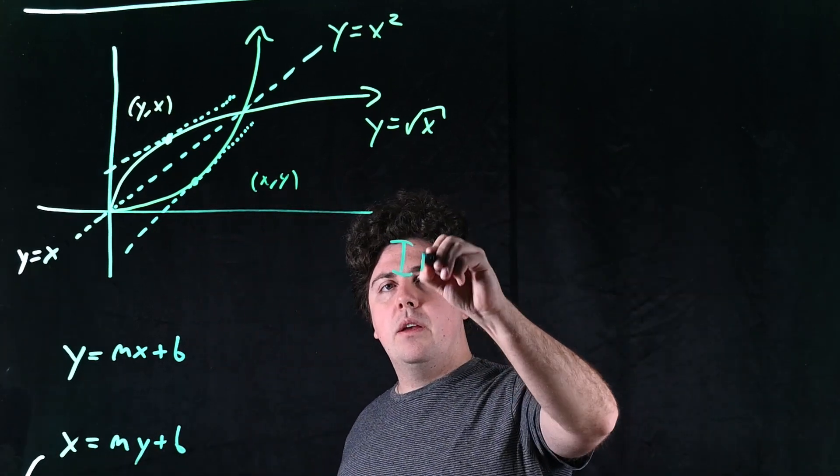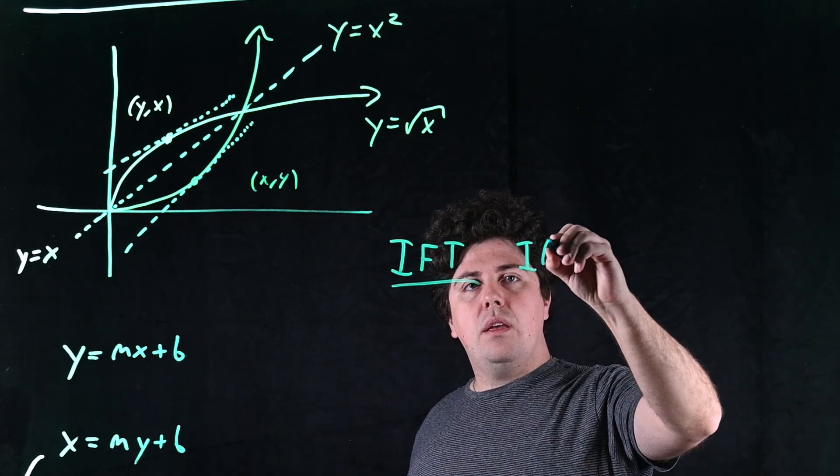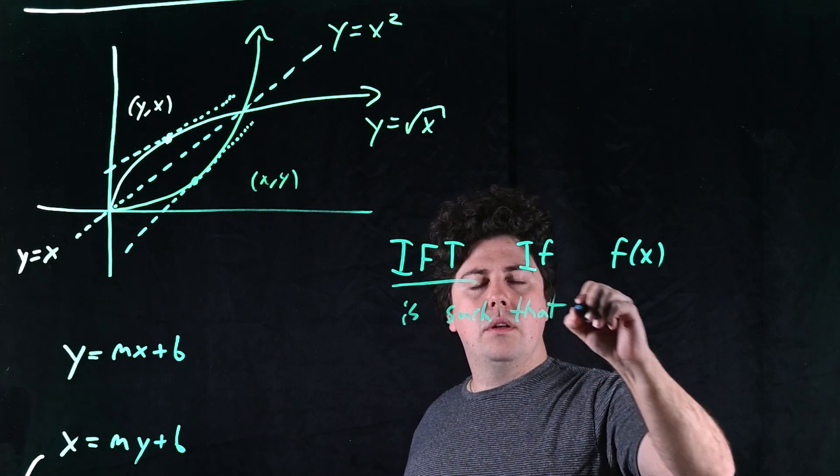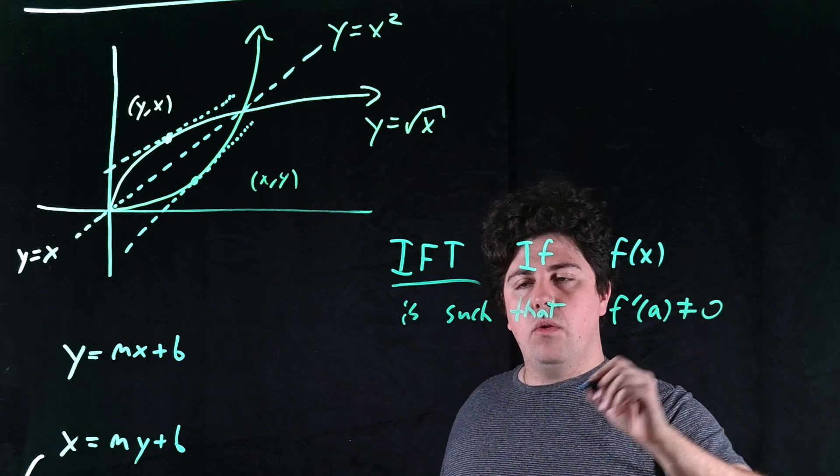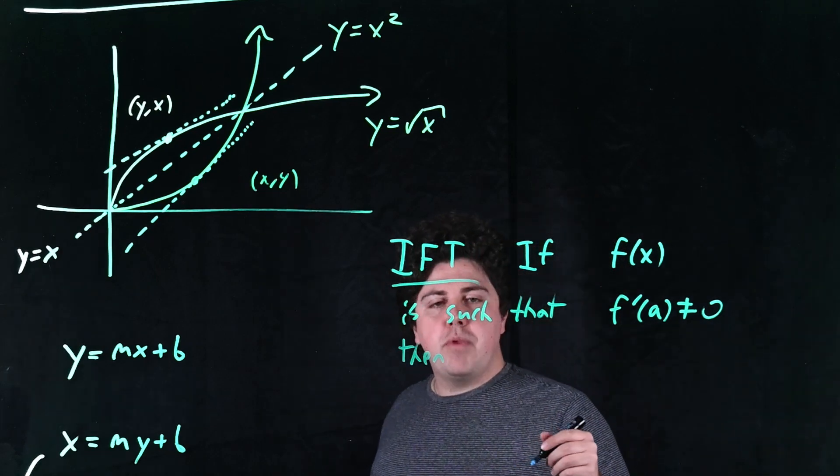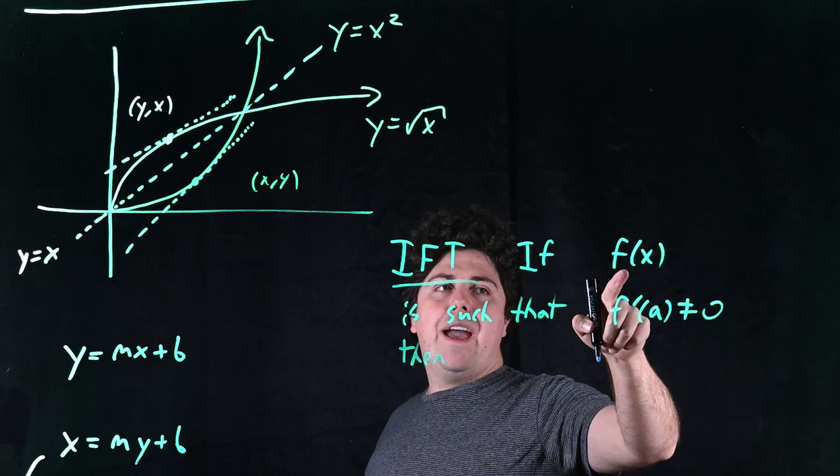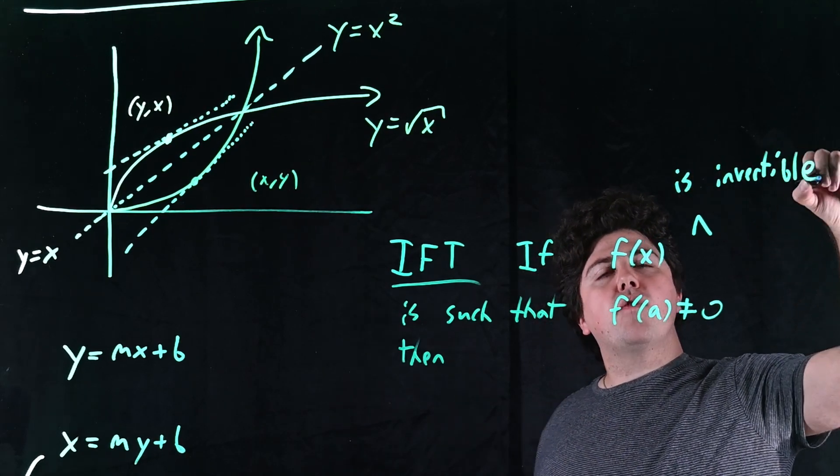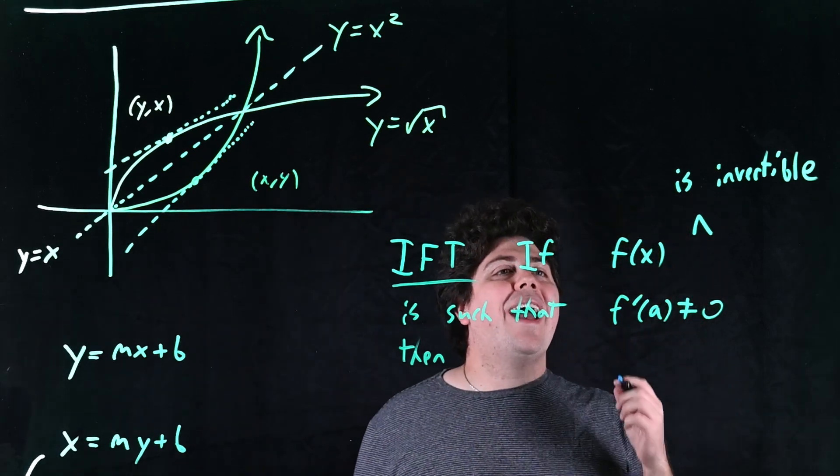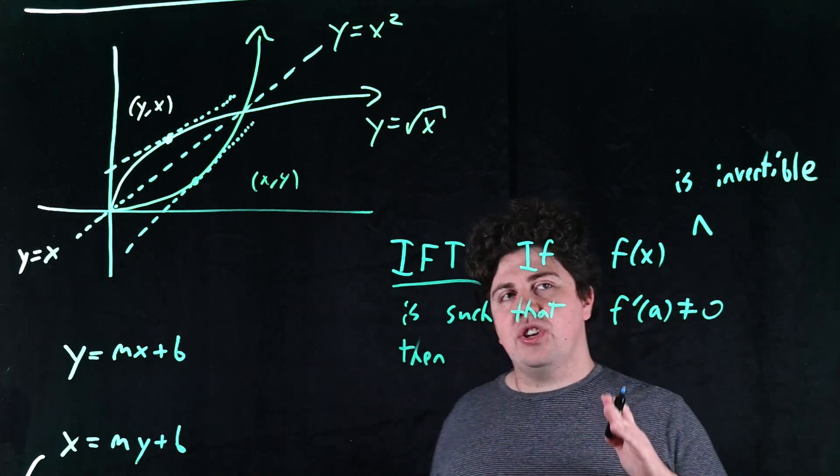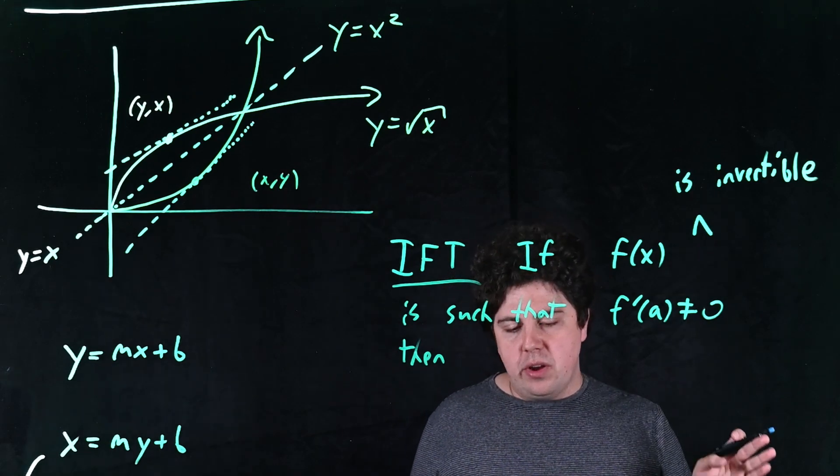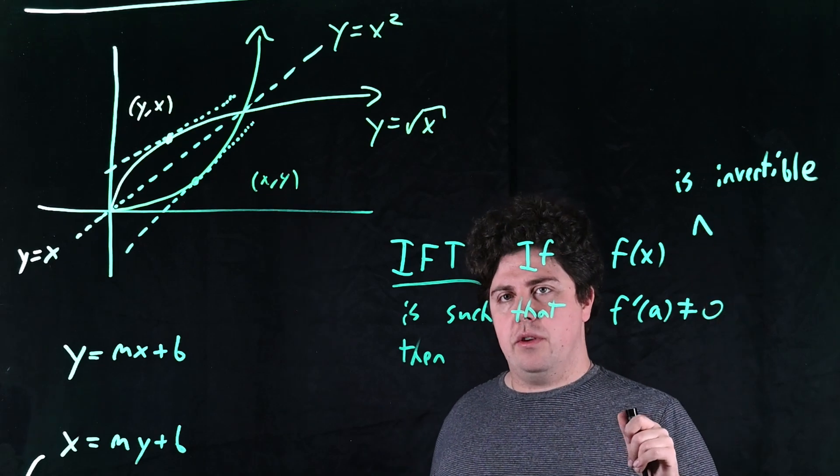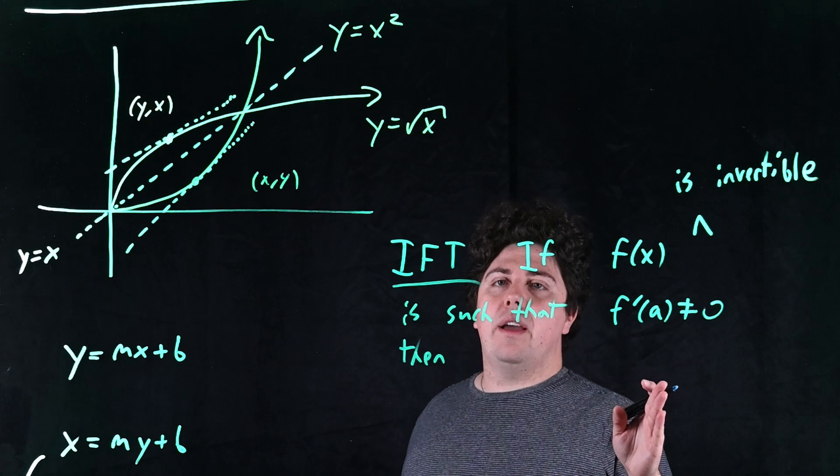So what's that saying? That's saying that the derivative of the inverse function at this point should be 1 over the derivative of the original function at this point. So let me write this notationally. So what this means, and this is called the IFT, the inverse function theorem, and this says if f at x is such that f prime at a is not 0, then, well, notationally, you've probably seen this before, we denote the inverse function of f as f inverse. So let me just add in if f is invertible. Because, of course, some functions aren't invertible, but imagine you have a function that you know has an inverse function.